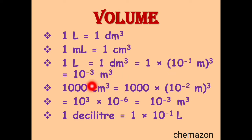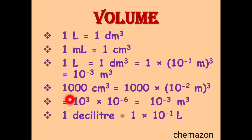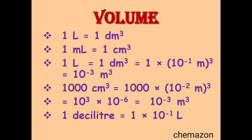All these basic unit conversions are very important. For example, 1 decilitre — decilitre stands for 10 raised to minus 1 — so 1 decilitre is 1 into 10 raised to minus 1 litre.